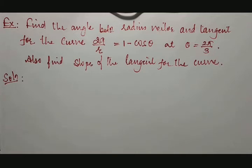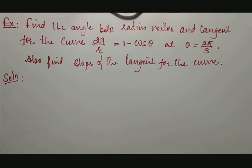In this session, we are going to discuss an example of finding the angle between the radius vector and tangent from a given polar curve at a given value of theta. We will also be finding the slope of the tangent. Before finding the slope of the tangent, we need to obtain the angle between the radius vector and tangent.